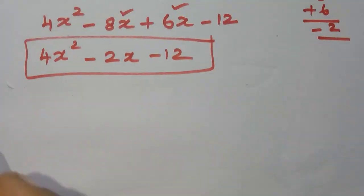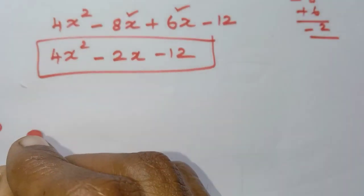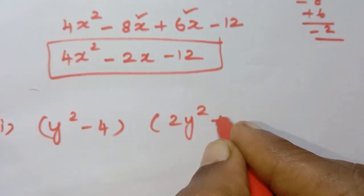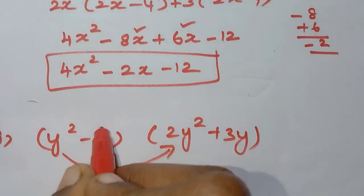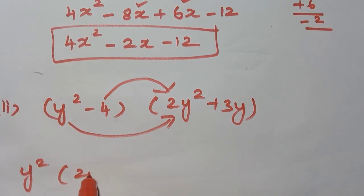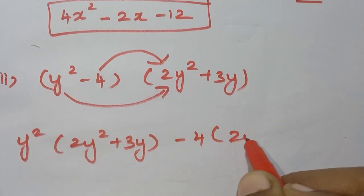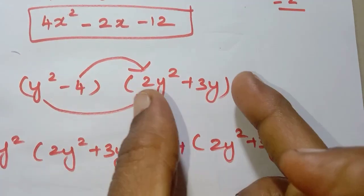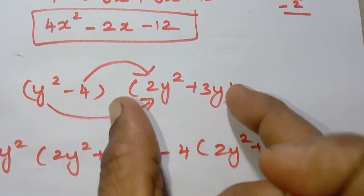Second question: (y² minus 4) into (2y² plus 3y). This is the whole multiplication. y² into (2y² plus 3y), then add minus 4 into (2y² plus 3y). The first term in the expression, then add this multiplication.